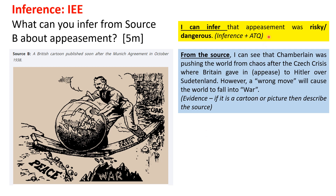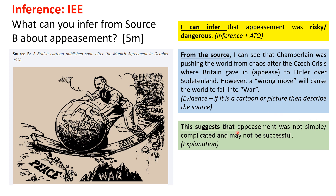So after you have made the inference and answered the question — which is in the yellow box — you follow it by giving evidence. The green colour box is actually the second E, which is the explanation. 'This suggests that appeasement was not simple, this suggests that appeasement could be complicated and may not be successful.' You can see that I've colour-coded the answers, and it's important because all the answers going forward will be colour-coded like this so you can see it visually.